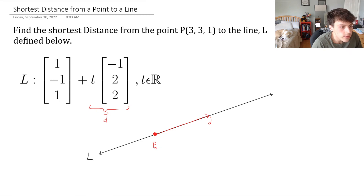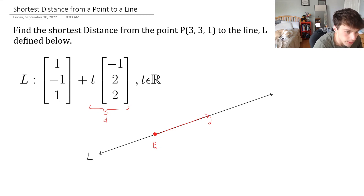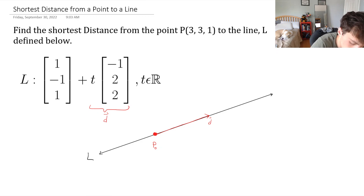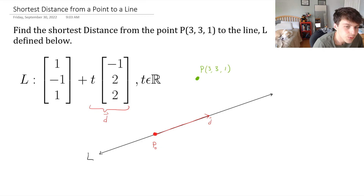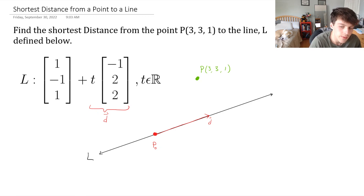Now we are looking to find the shortest distance from the point (3, 3, 1) to the line. So let's label some arbitrary point in this sketch — we'll put it right over here and call this P, which is (3, 3, 1). We're just putting everything into a diagram.